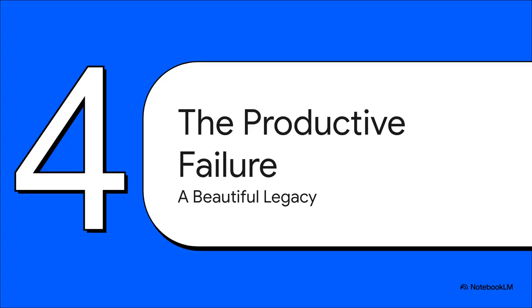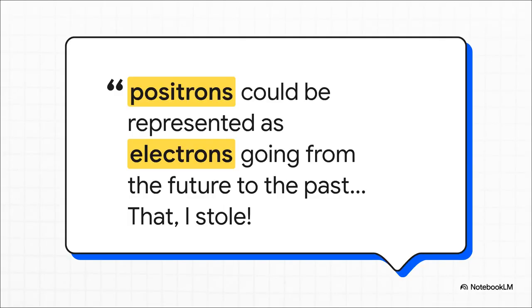So, if this idea is so completely and totally wrong, why on earth are we still talking about it? Well, because this is where the story takes a fascinating turn. The one electron universe might just be the most productive and influential failure in the entire history of science. And Feynman himself tells us exactly why. He later admitted he never took the whole one electron for the whole universe part too seriously. But that other piece of the idea, the part where a positron could be seen as an electron moving backward in time, he knew that was pure genius. As he famously put it, that I stole.